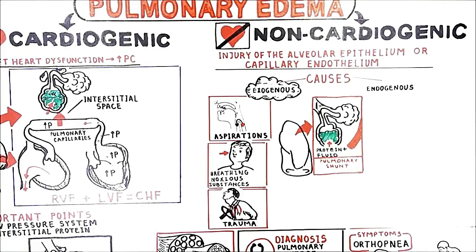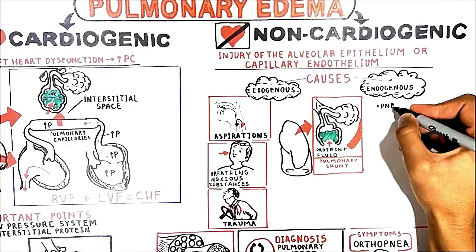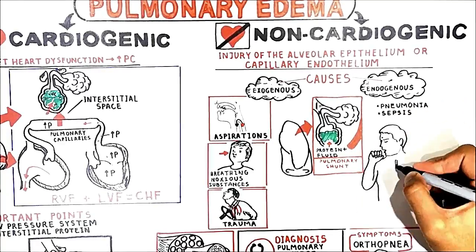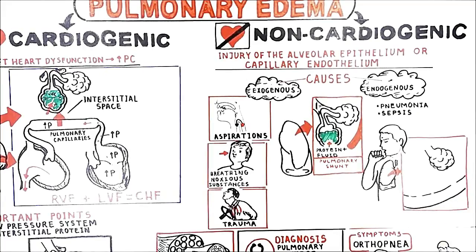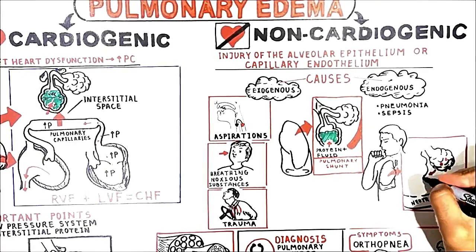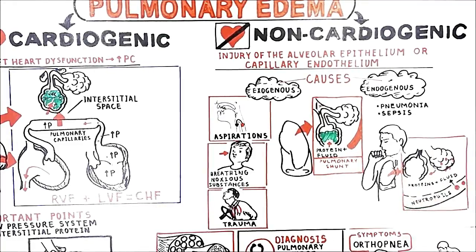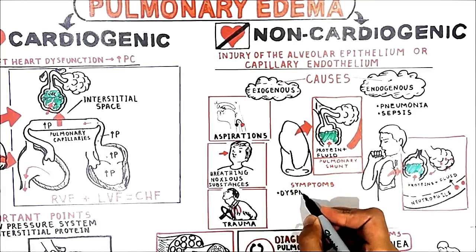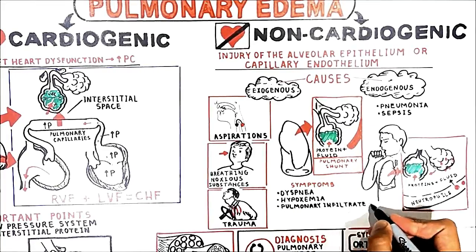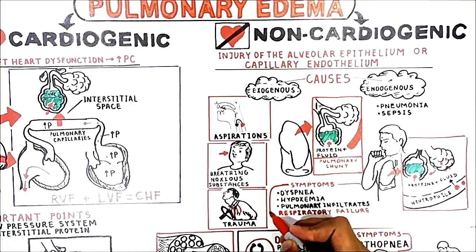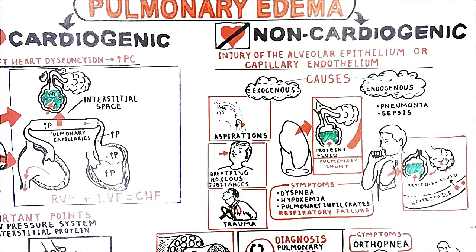The endogenous factors that lead to non-cardiogenic pulmonary edema commonly include pneumonia and sepsis. Sepsis first causes damage to the alveolar capillaries; as a consequence, neutrophils leak out into the interstitium. These neutrophils cause damage to the alveolar membrane, and proteins with fluid leak out into the alveoli, causing pulmonary edema. Clinical signs are severe dyspnea of rapid onset, hypoxemia, and diffuse pulmonary infiltrates leading to respiratory failure. An important point to note is that in non-cardiogenic edema, the pulmonary wedge pressure is normal or low.